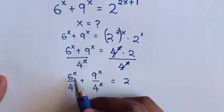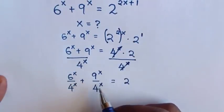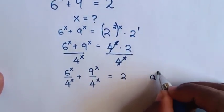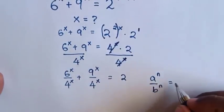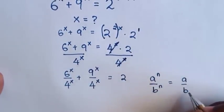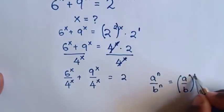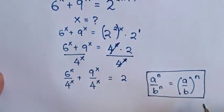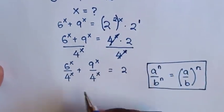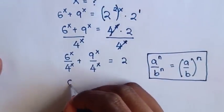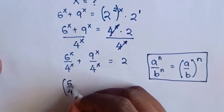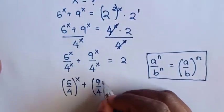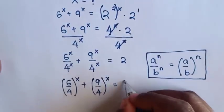From here, the power of x is common. We will apply the rule: a power of n over b power of n is equal to a over b bracket power of n. So, since x is common, it will be 6 over 4 bracket power of x plus 9 over 4 bracket power of x is equal to 2.